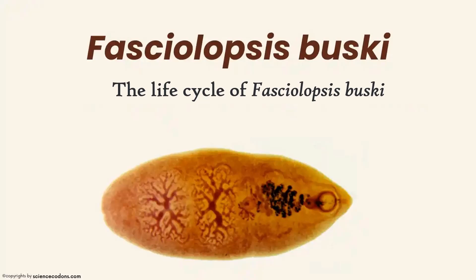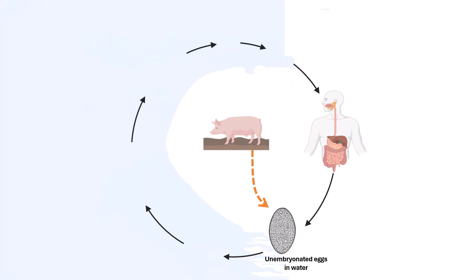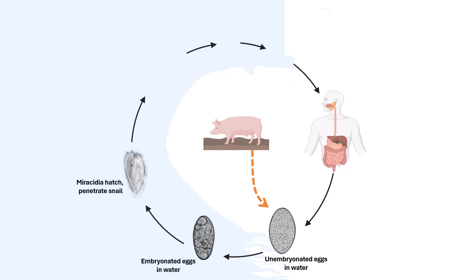But how is the life cycle of this trematode? Well, immature eggs are discharged into the intestine and stool. Eggs become embryonated in water, and after that, eggs release miracidia, which invade a suitable snail intermediate host.